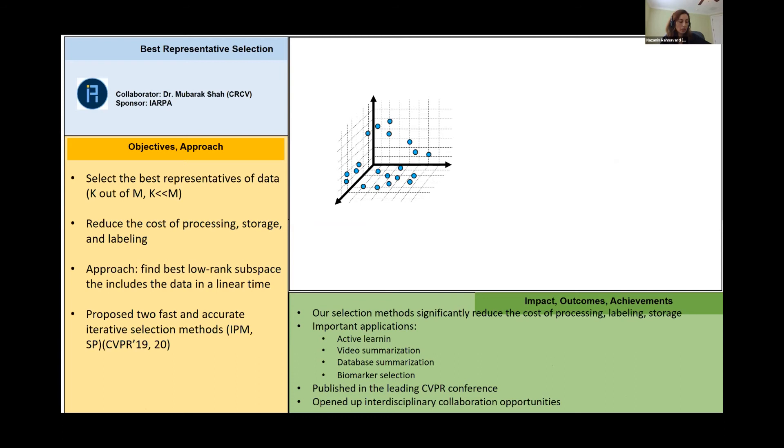And last but not least, I also looked at the best representative selection to reduce the number of data. This is a collaborative work with Professor Shah from CRCV supported by IRPA. And again, the idea is that if you have a lot of data, I would like to just select the best representatives that also reside within the data. This is an NP-complete problem.